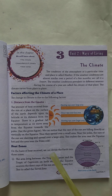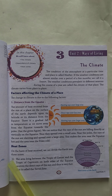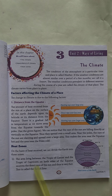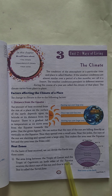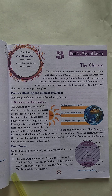Next is heat zones. On the basis of heat received, we can divide the earth into three zones. First, the area lying between the Tropic of Cancer and the Tropic of Capricorn on both sides of the equator receives the direct rays of the sun and thus it is very hot. This is called the torrid zone.